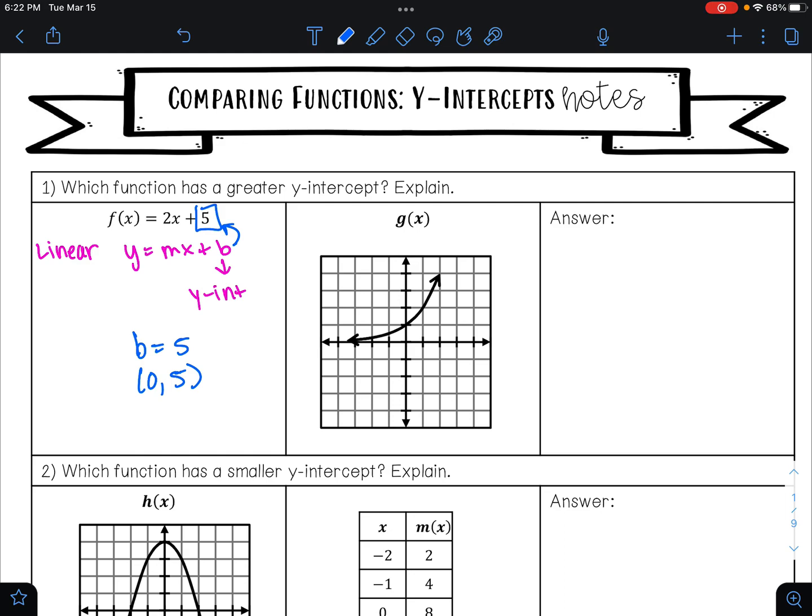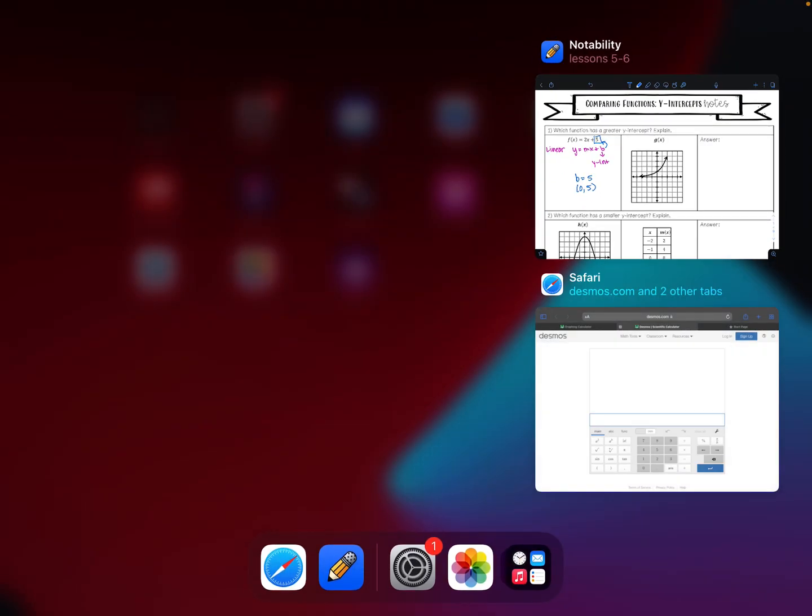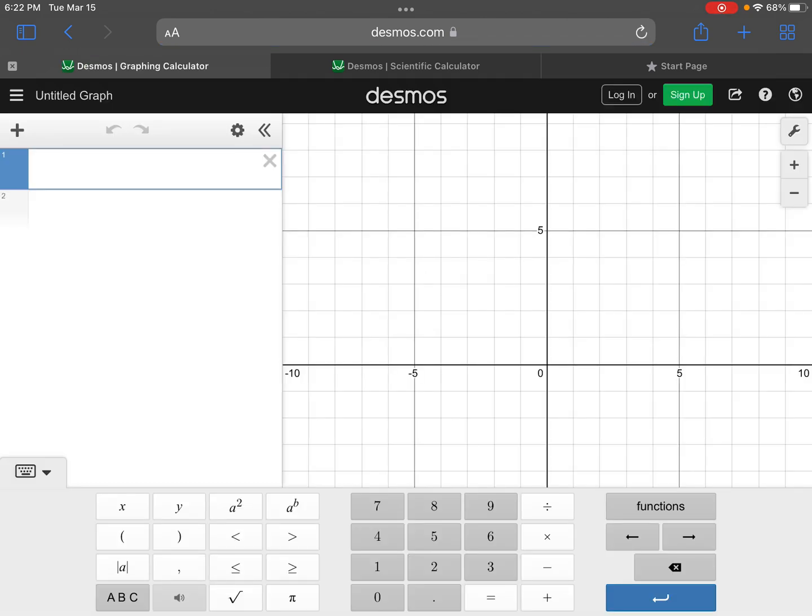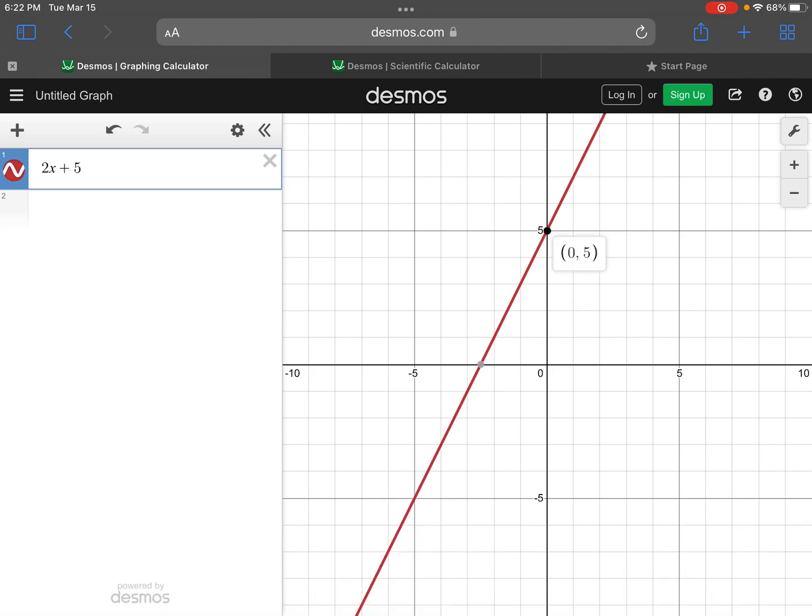If you weren't sure, you could pull up Desmos. And if we go to that graphing calculator, there we go. And you could type in 2x plus 5 in Desmos. And you could click right on that y-intercept, (0, 5).